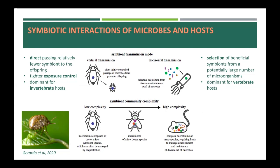In other systems, such as invertebrates, the symbionts are often transmitted vertically from parents, usually the mother, to the offspring. Vertical transfer results in relatively fewer symbionts being passed directly from hosts to their offspring, allowing for tighter exposure control to the symbiont by the offspring. Parents can facilitate the transfer of symbionts in many ways, for example by coating the surface of the eggs with microbial symbionts, or in the case of kudzu bugs shown in this picture, by placing the microbes in a closed capsule next to the hatching offspring, which it consumes immediately after hatching.